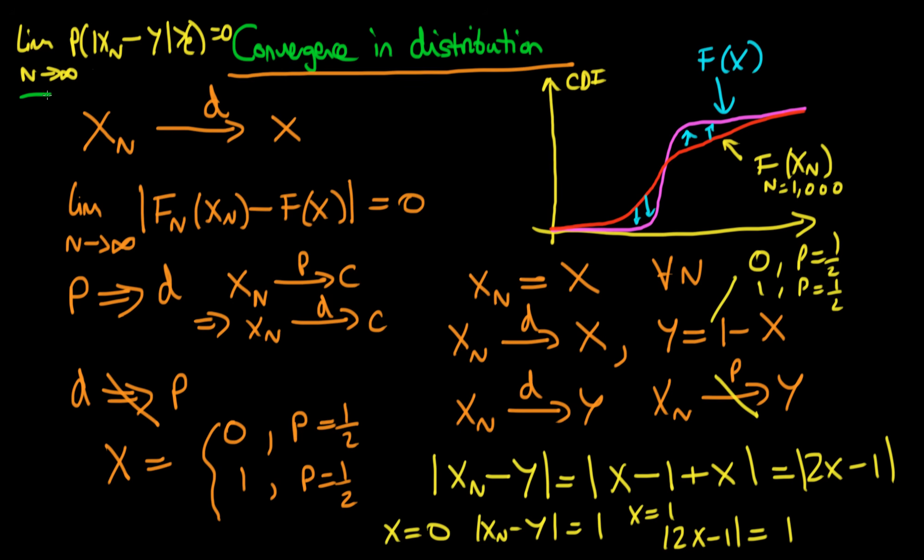So no matter how much we try there's no way that we can make the difference between Xn and Y arbitrarily small. It's always equal to 1. And because of that we don't have convergence in probability although we do have convergence in distribution of Xn towards Y.